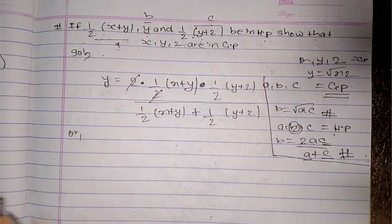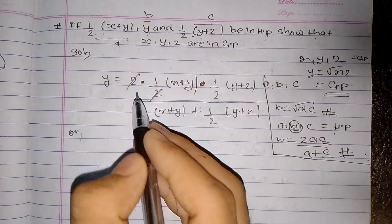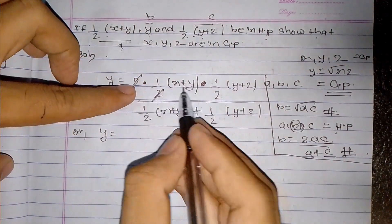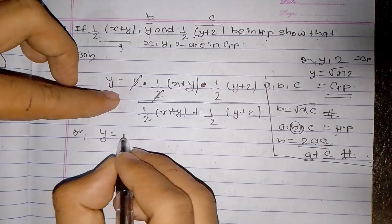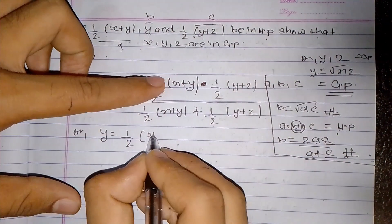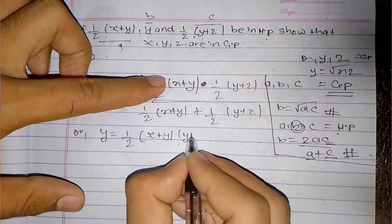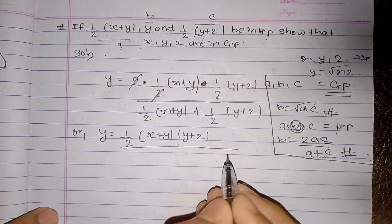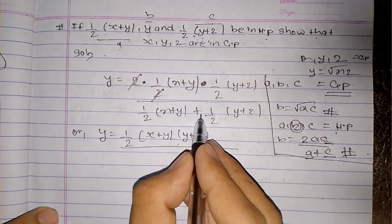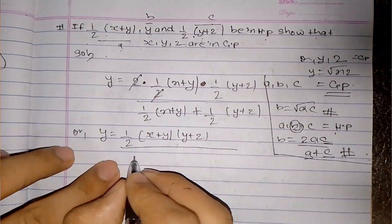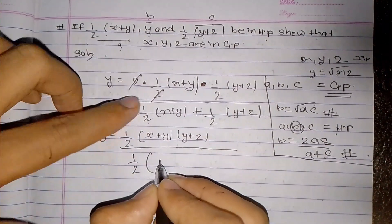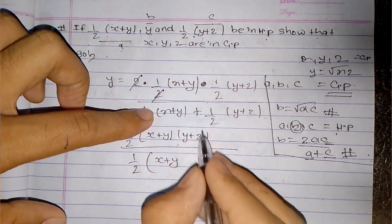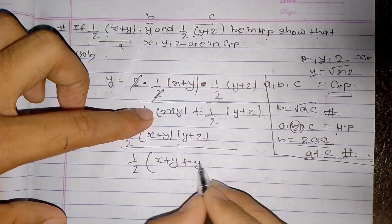So y equals 2, and this is 1 by 2. This is x plus y, and this is y plus z. Now this is 2, and 1 by 2 is common. So we have x plus y and y plus z as the two terms.